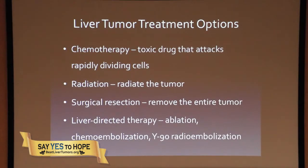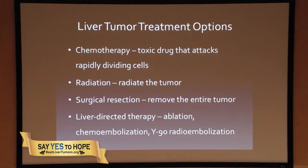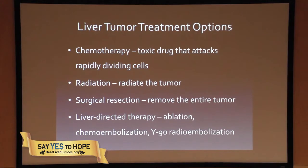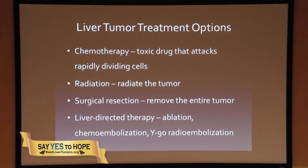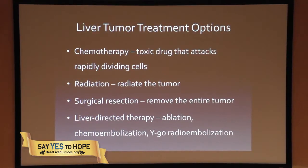You have things like chemotherapy — all it is is a toxic drug and it generally hinders cell growth. With radiation, you can radiate the entire part of the tumor and they've gotten very good at directing it towards the tumor. Surgical resection is what we call the gold standard. If you are able to get the tumor out, if it's limited, you want to take the entire tumor out because it's 100% cure.